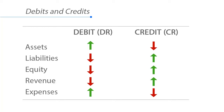What you're seeing now are arrows that show whether an account increases or decreases based on a debit or credit. Assets increase when debited and decrease when credited. If you want to increase a liability, you credit it; to decrease a liability, you debit it. Equity is decreased on a debit and increased on a credit. Revenue is decreased on a debit and increased on a credit. Expenses are increased on a debit and decreased on a credit.